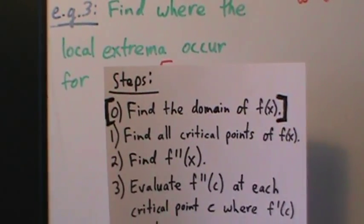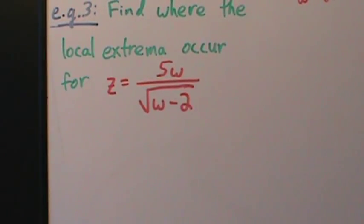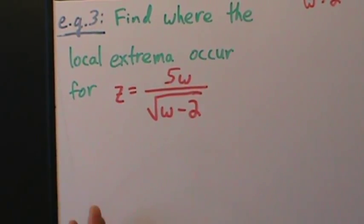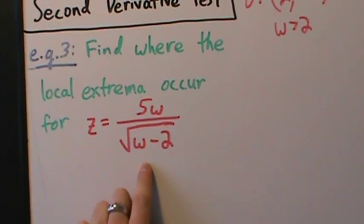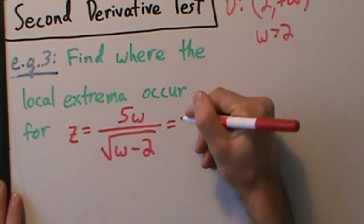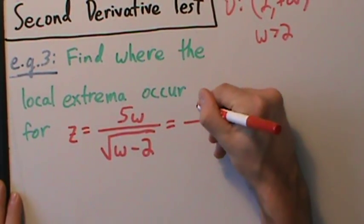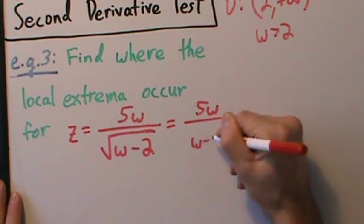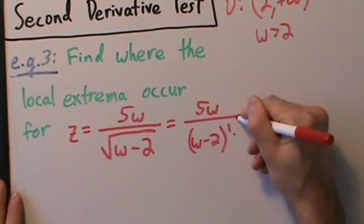Step 1: find all the critical points of the function. How do we find critical points? We take a derivative, set it equal to 0, figure out where the derivative is undefined, and all that. Before we do that, let's rewrite this with fractional exponents. So this is 5w divided by w minus 2 to the one half.